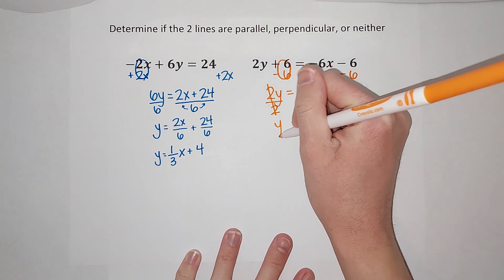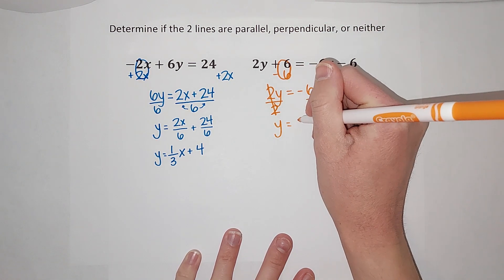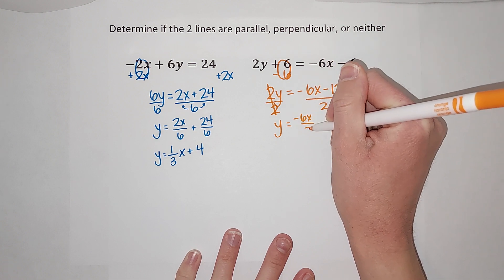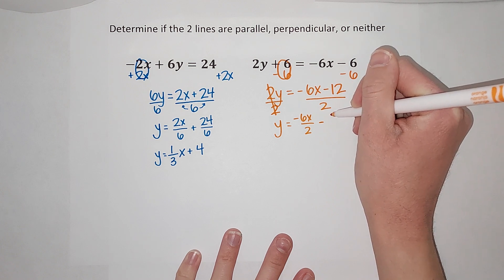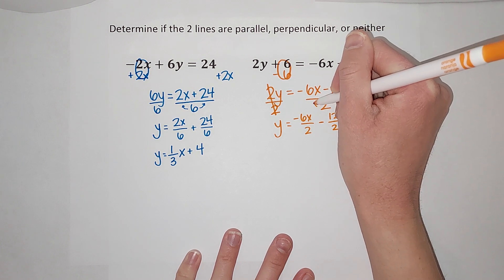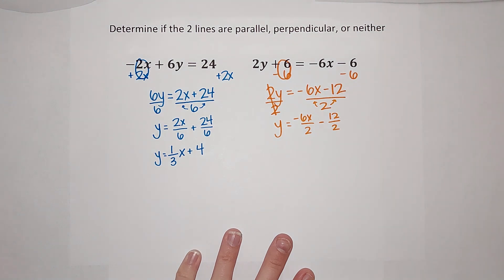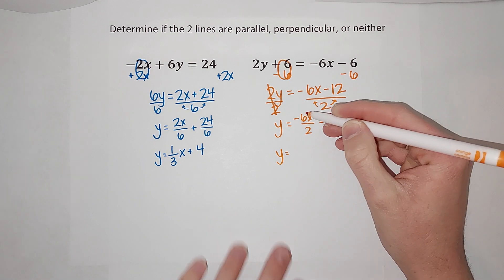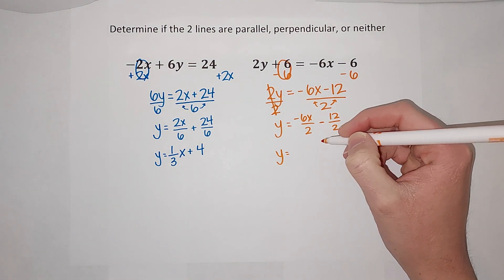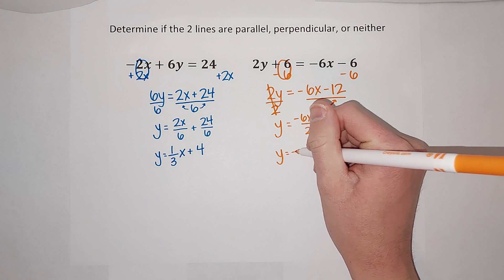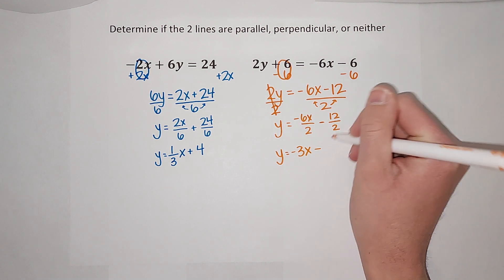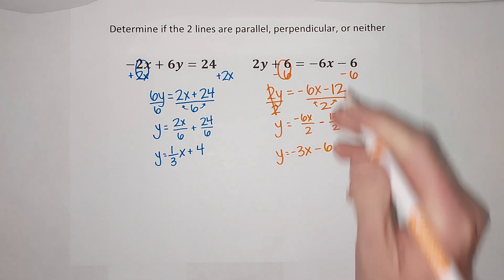I'm gonna split these up again, so I'm gonna have negative 6x over 2 minus 12 over 2. You see how I just put the 2 under each of them? Now we're going to simplify these. I've got a negative 6 divided by 2, which gives me negative 3, and we still have the x, minus 12 over 2 gives me 6. I have my two equations.